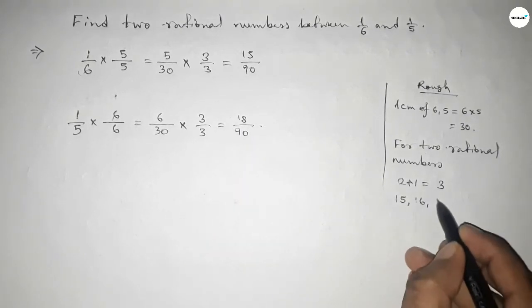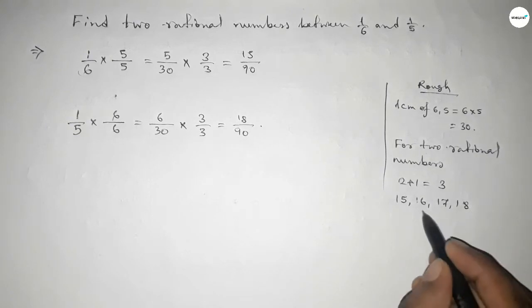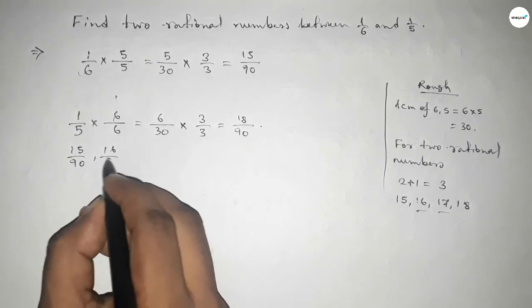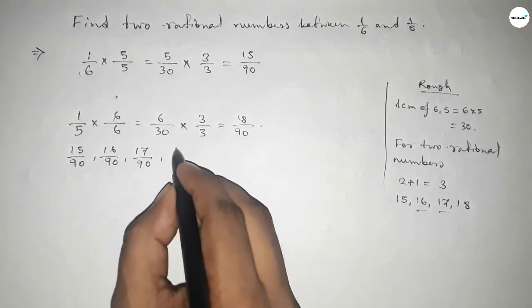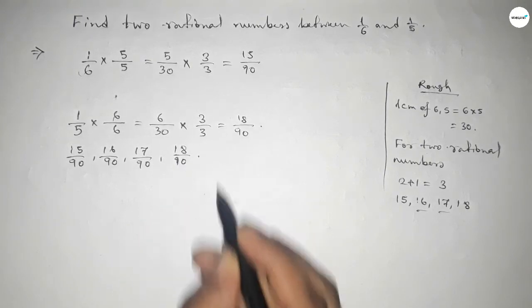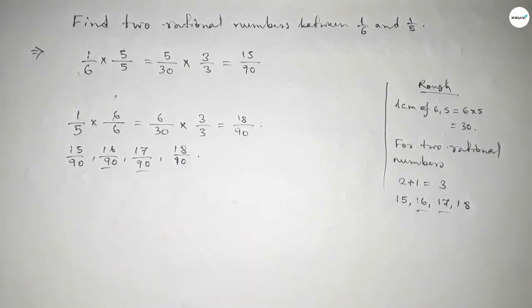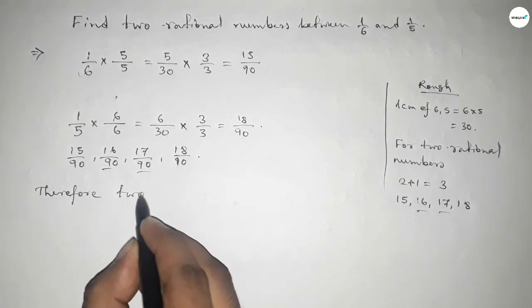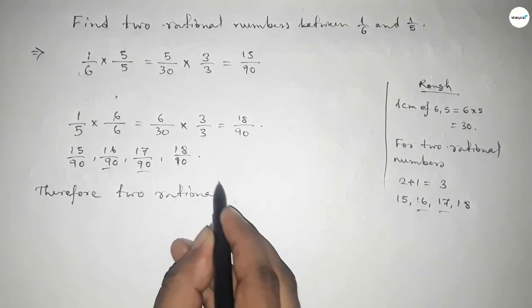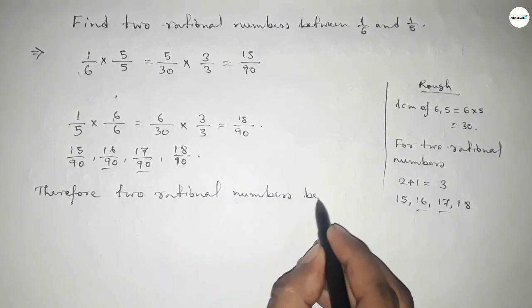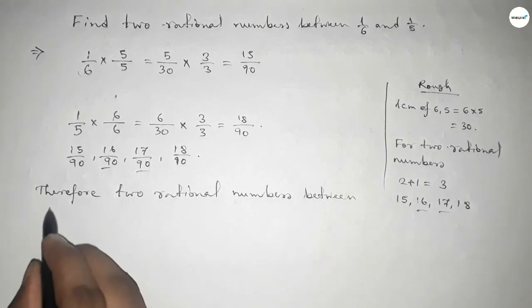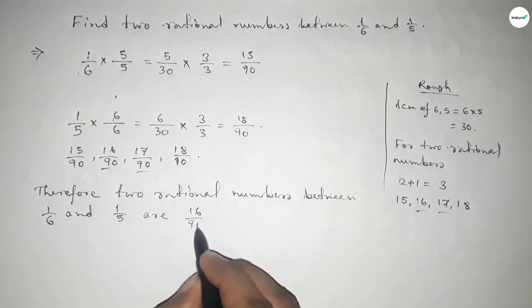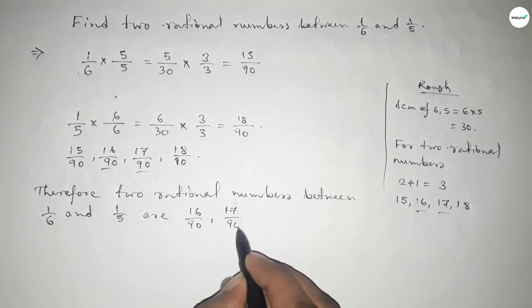Now between 15 and 18, we can get two natural numbers, and by these natural numbers we can form rational numbers. Therefore, the two rational numbers between 1/6 and 1/5 are 16/90 and 17/90.